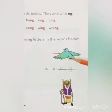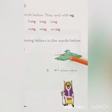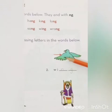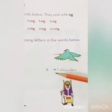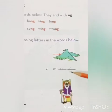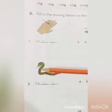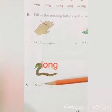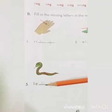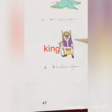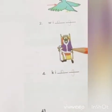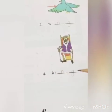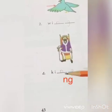Number two, this is a picture of a bird and the arrow shows wing. The spelling of wing is w-i-n-g, so in the given blank we write: ng. Number three, this is a picture of a snake and it's long — l-o-n-g — so we write: ng. Number four, this is a picture of a king. The spelling of king is k-i-n-g, so we write in the given blank: ng.